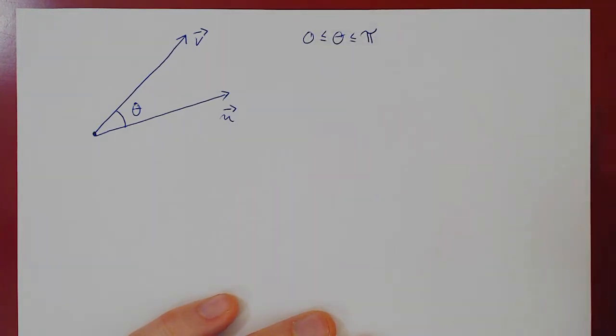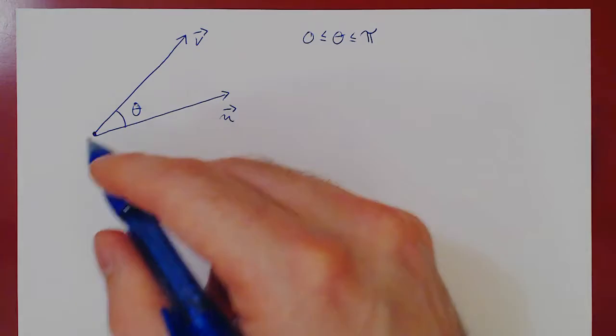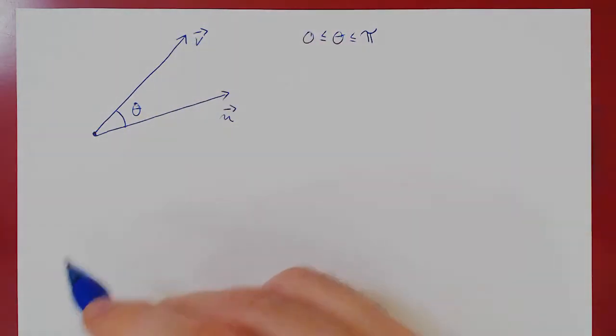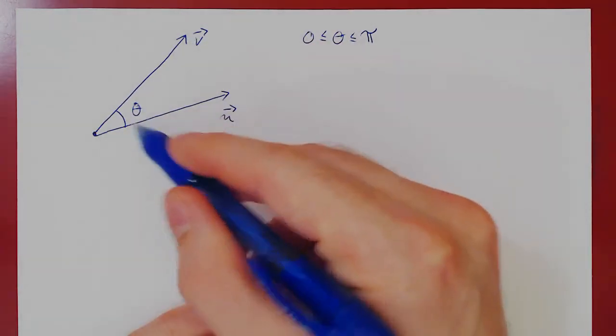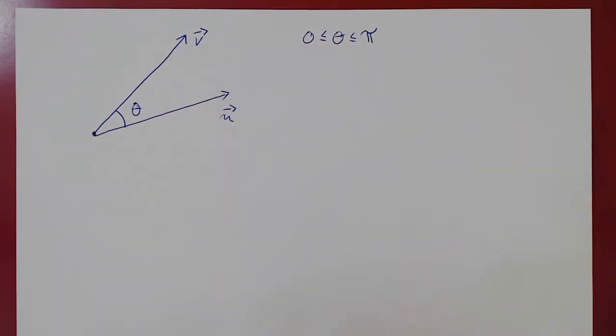The natural question is: if I give you two vectors that are algebraic vectors, can you find the angle between the two vectors? And as we will see, we can do so using the dot product.